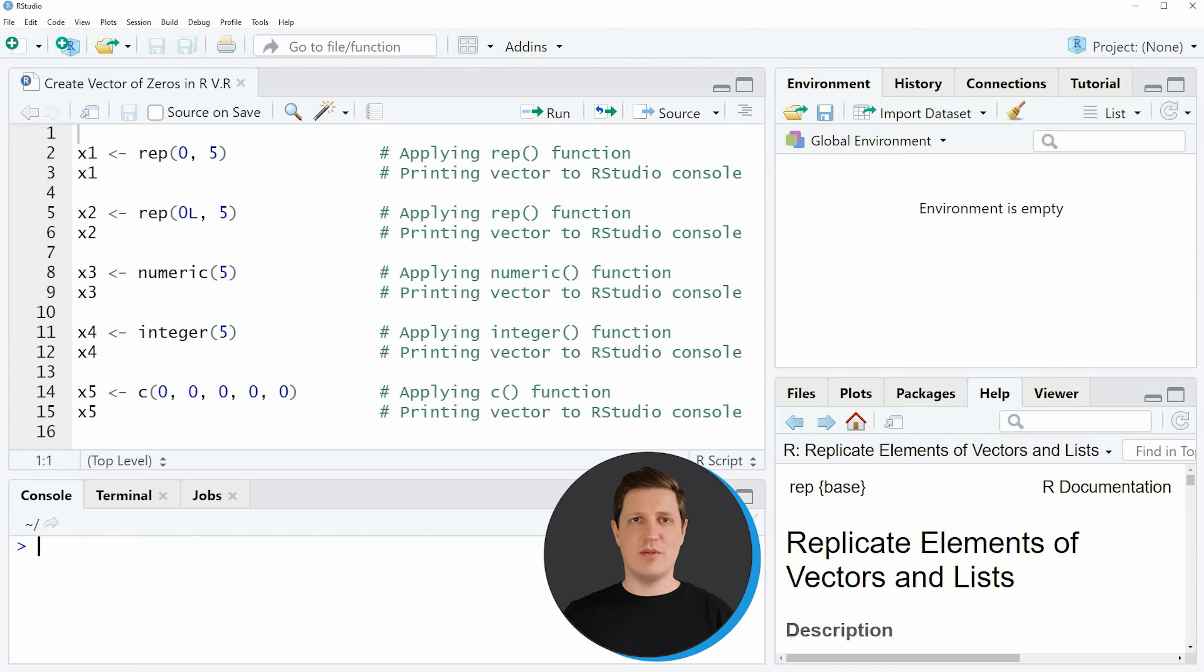Hi, I'm Joachim for StatisticsGlobe and in this video I'll explain how to create a vector of zeros in the R programming language. In the video I'm going to show you five different examples and the first example is based on the rep function as you can see in line 2 of the code.